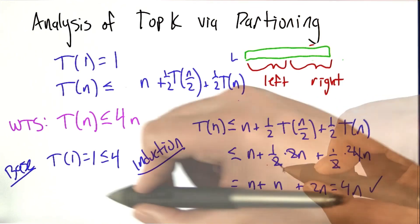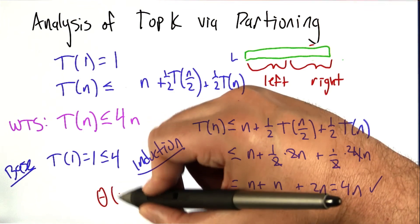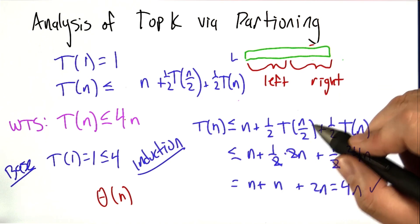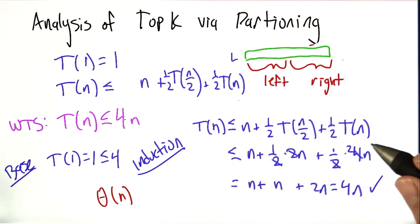But this is pretty remarkable. Because what that means is we actually find the top k elements in big theta of n. 4n is big theta of n. So the running time is going to be linear, which is pretty neat.